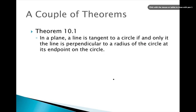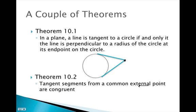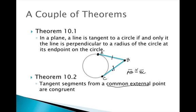Theorem 10.2 states that tangent segments from a common external point are congruent. Here we have two tangent segments that intersect at an external point — these two segments are congruent and have the same exact length. If we label the points A, B, and C, segment AB is congruent to segment BC. This is always the case: if they share a common external point outside the circle and are both tangent to the same circle, the two segments will be congruent.